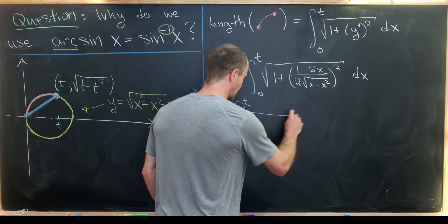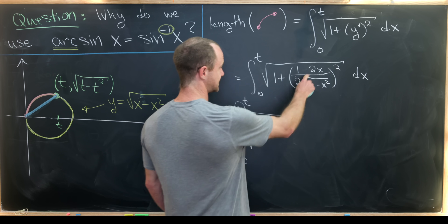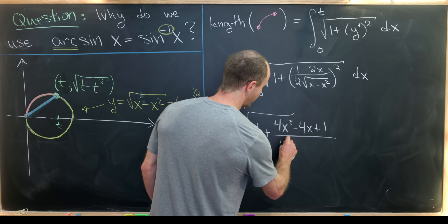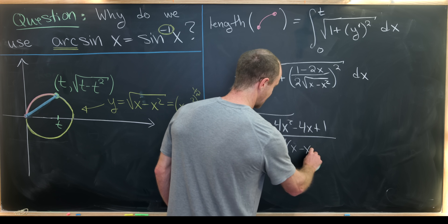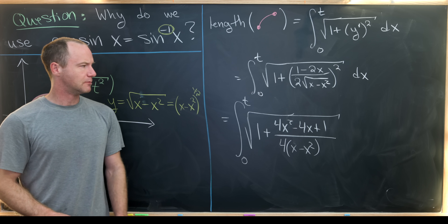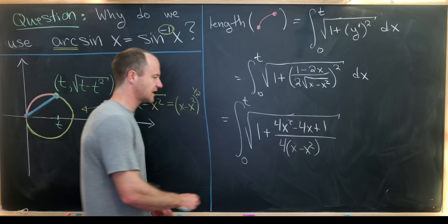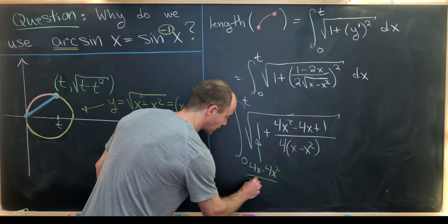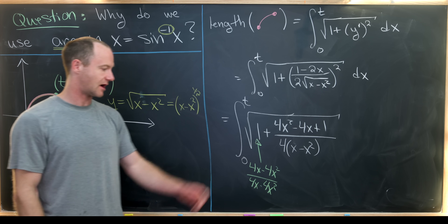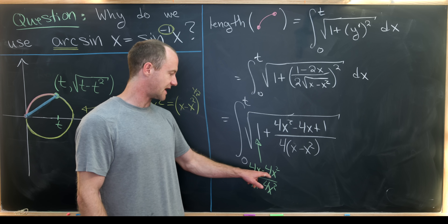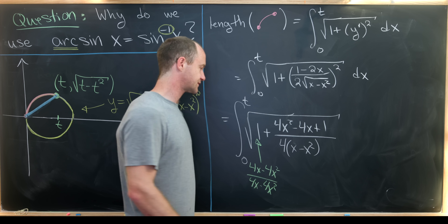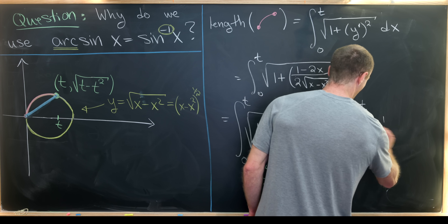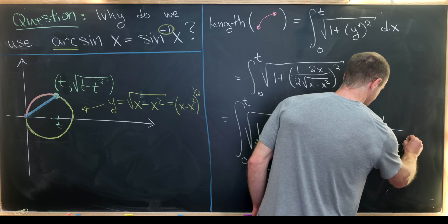Simplifying: that squared derivative becomes (4x² - 4x + 1) over (4(x - x²)). Giving ourselves a common denominator by writing 1 as (4x - 4x²) over (4x - 4x²), the 4x and -4x² terms cancel in the numerator, leaving just 1. So we get the integral from 0 to t of 1 over the square root of 4(x - x²), dx.